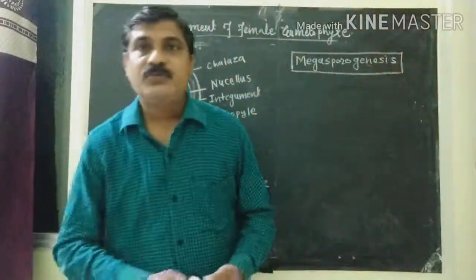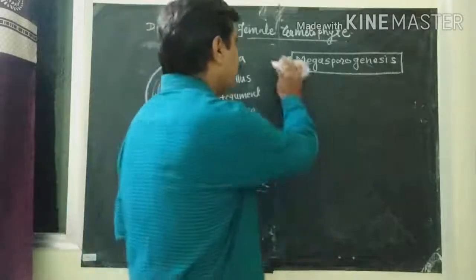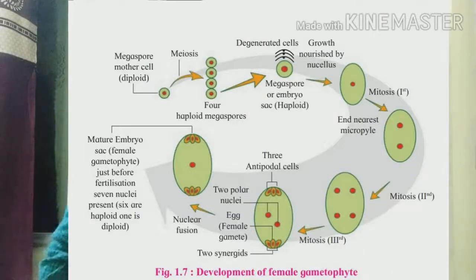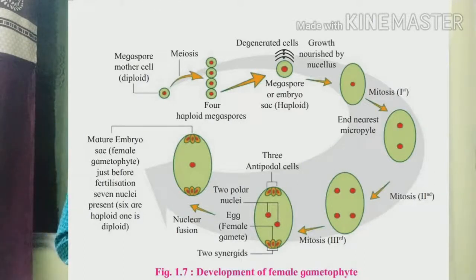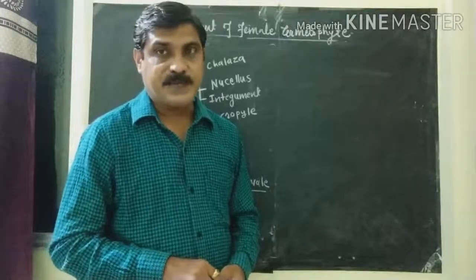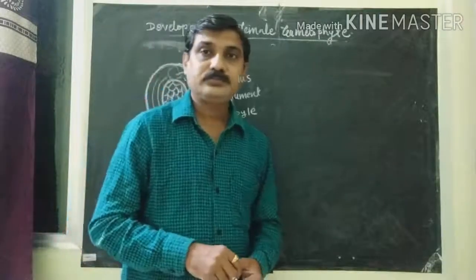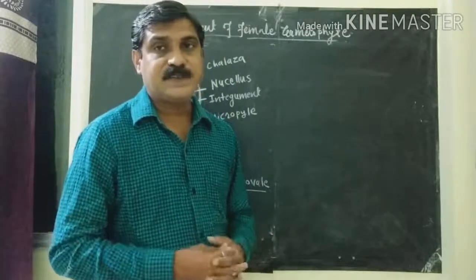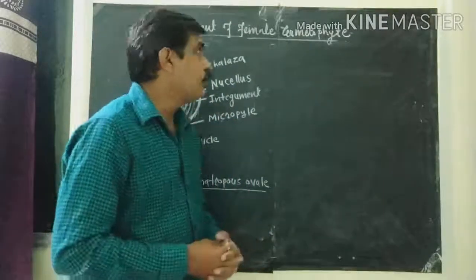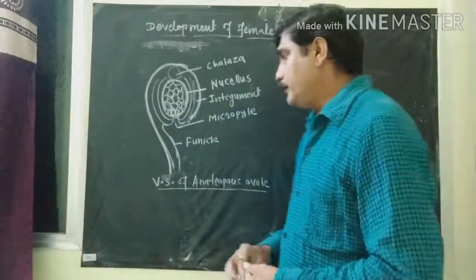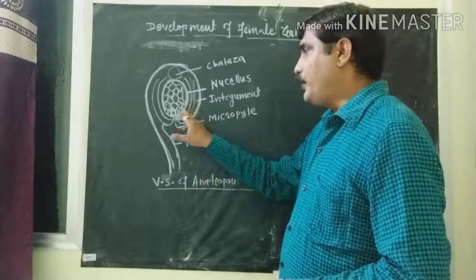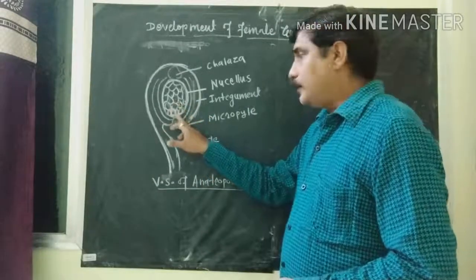Now let us discuss about the development of female gametophyte. Where gametes are produced, such a structure is called the gametophyte, and here female gametes are produced, thus it is also known as the embryo sac. Let us discuss the process of development of female gametophyte in the view of an anatropous ovule.